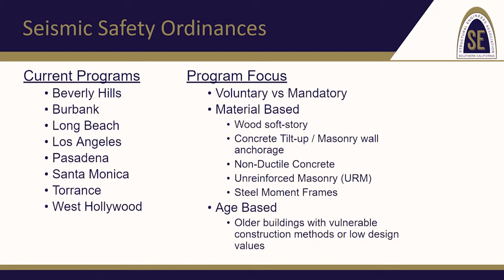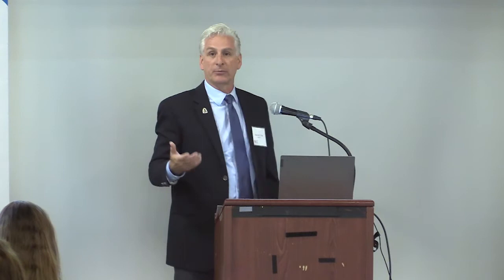Quite often these unreinforced masonry buildings are restaurants. The tenants and occupants need to know there is a risk. Beverly Hills, Burbank, Long Beach, Los Angeles, Pasadena, Santa Monica, Torrance, and West Hollywood are all jurisdictions in Southern California that have either implemented or are talking about implementing specific retrofit programs. These programs can be voluntary or mandatory — the URM program is voluntary.